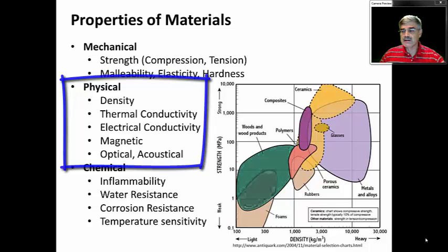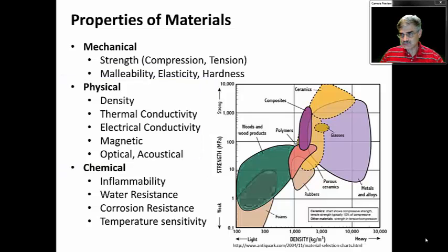That is, do they transmit light? Do they transmit sound? Chemical properties can include flammability, whether or not a substance will burn, resistance to water, whether or not it will dissolve away or somehow react with water, resistance to corrosion, corrosion by either acids or possibly corrosion by gases, including oxygen, and temperature sensitivity, whether or not something easily melts.